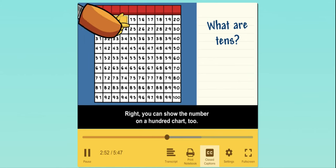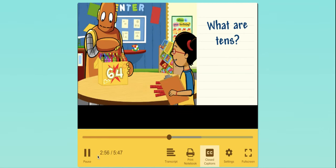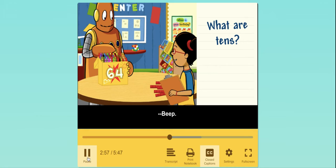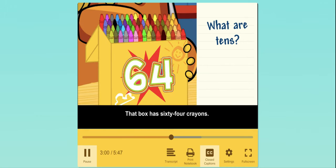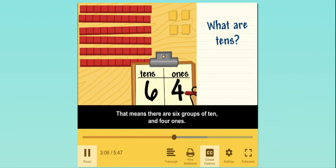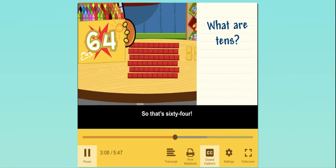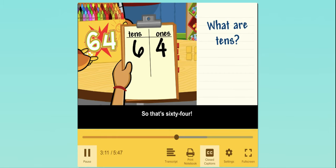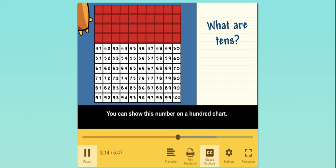Right. You can show the number on a hundred chart. That box has 64 crayons. That means there are 6 groups of 10 and 4 ones. So that's 64. You can show this number on a 100 chart.